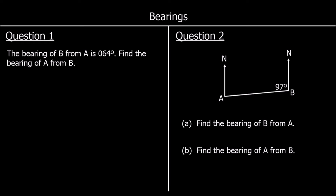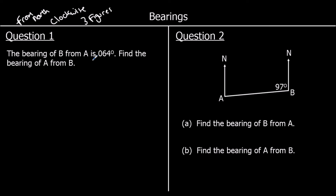Bearings. Bearings are angles that are measured from north, clockwise. We give them as three figures, so we don't write 64 degrees — we put a zero in front of the 64, so there will always be three figures. Question one says the bearing of D from A, so going from A to B is 64 degrees — it's 64 degrees from north.